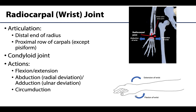The wrist can flex and extend, with flexion having the greater range of motion. It can also abduct, sometimes referred to as radial deviation — moving the wrist and hand away from the body — as well as adduct, sometimes referred to as ulnar deviation, moving the wrist and hand back towards the body.